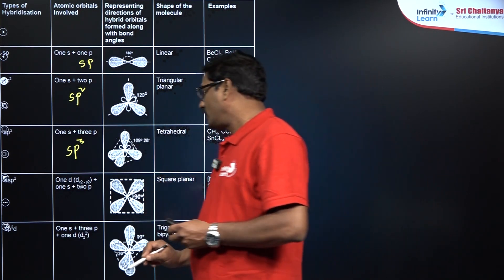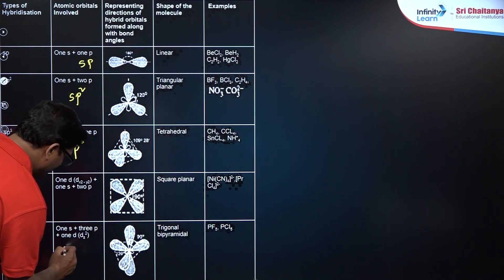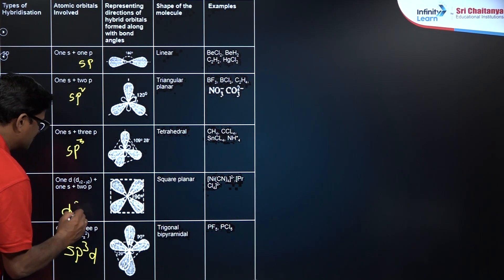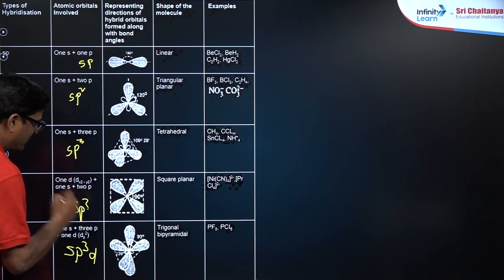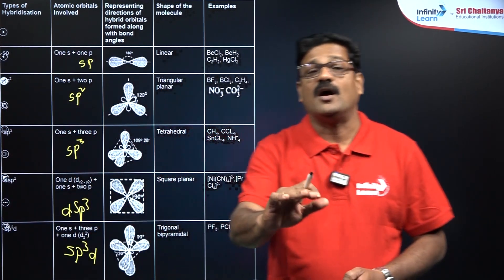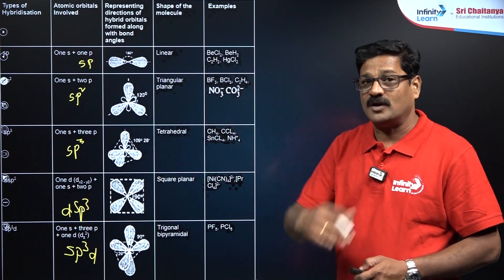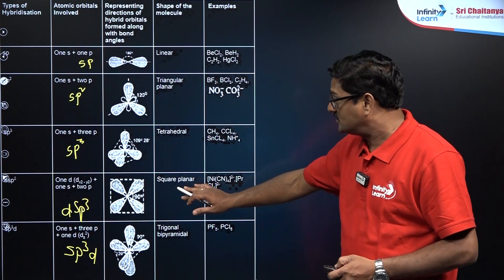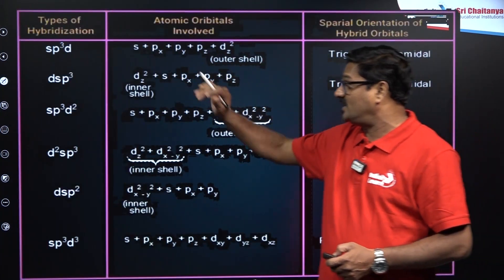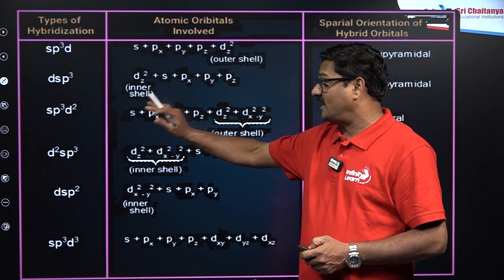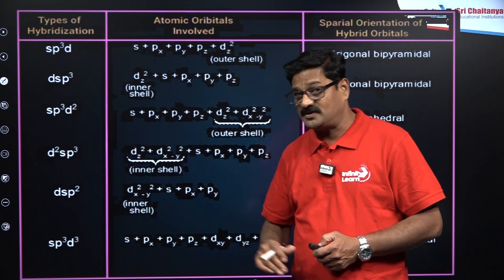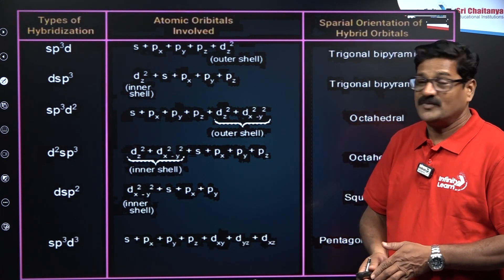We are also going to see SP3D and DSP3 type of hybridization. In the next slide, we will cover D-orbital involving hybridizations: SP3D, DSP3, SP3D2, D2SP3, and DSP2.